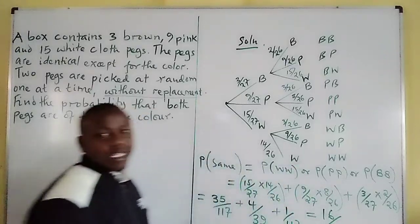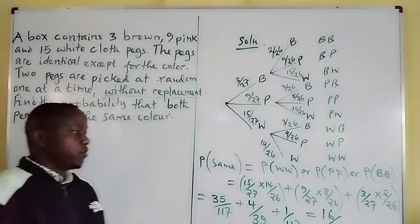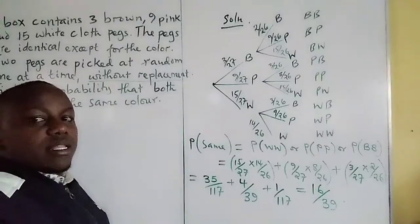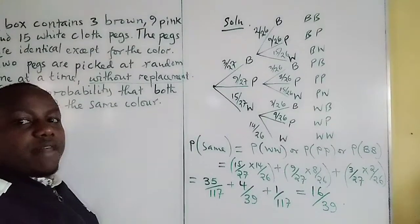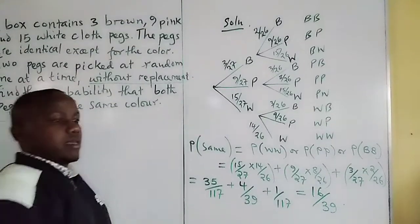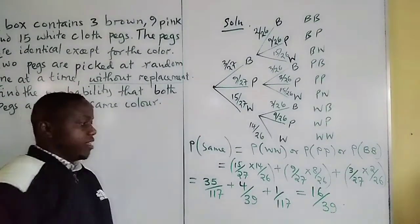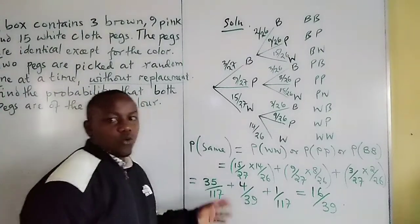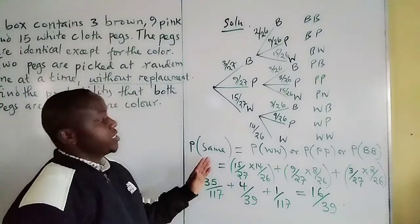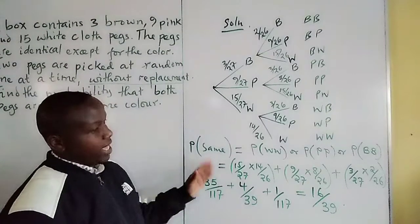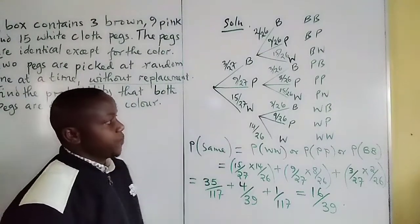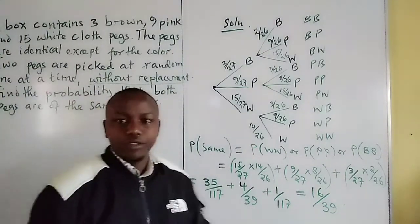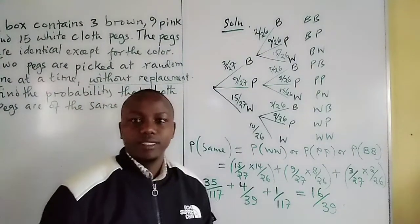The final probability that both picked pegs are of the same color is 16 out of 39. Thank you for following — subscribe to Shifting Grids.